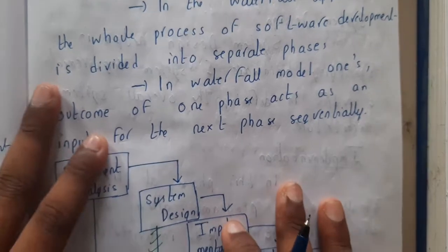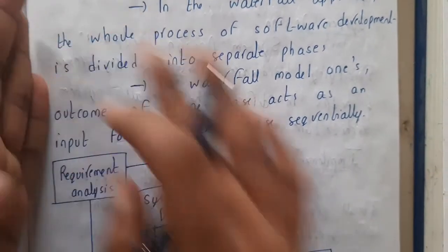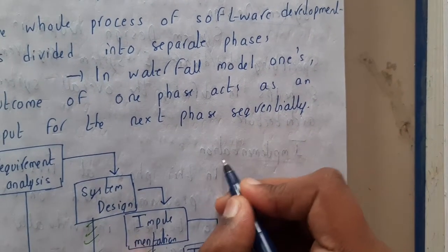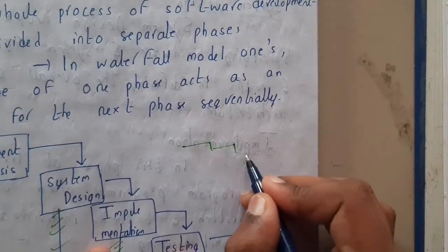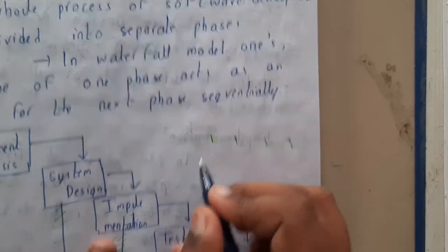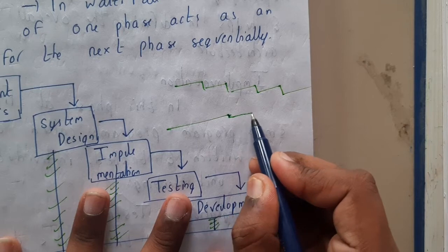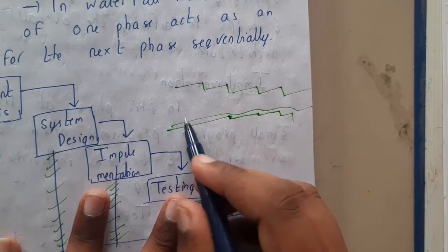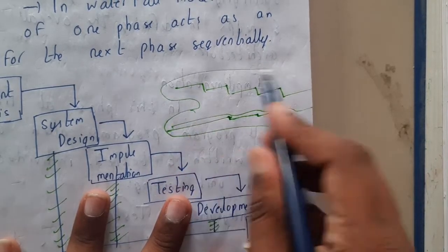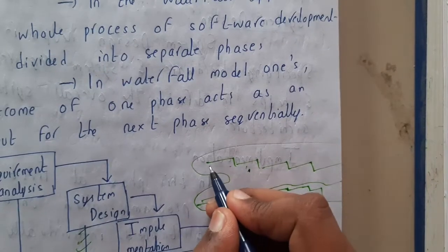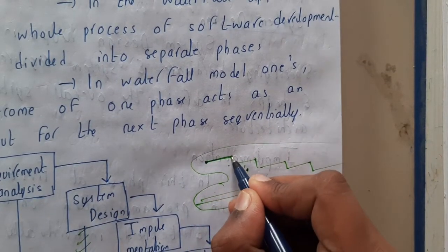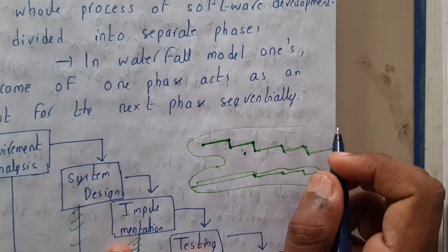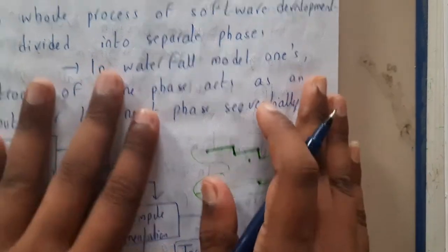From the name, we can say it is like a waterfall. Assume there is a huge waterfall — like when you visit dams or waterfalls, there are steps where the water flows downward step by step. That is the main idea of the waterfall model: you complete one step, move to the next, and continue in that sequence.